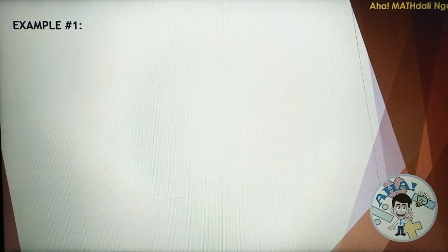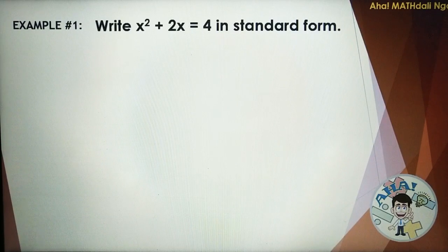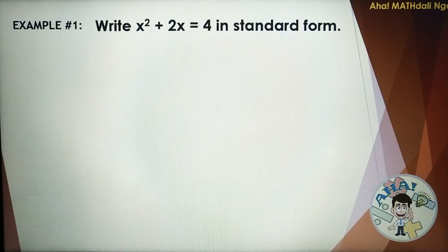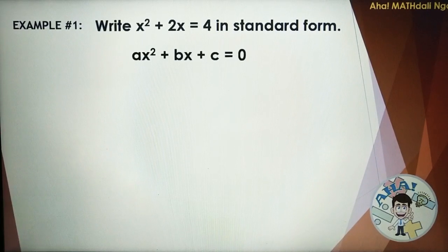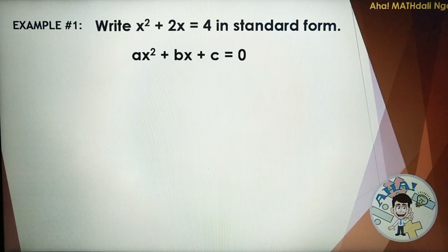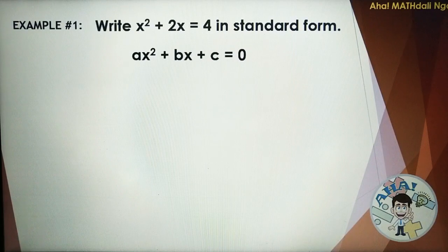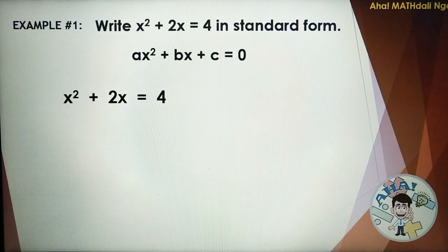Example: Write X squared plus 2X is equal to 4 in standard form. The standard form of a quadratic equation is written as AX squared plus BX plus C is equal to 0. The given equation is X squared plus 2X is equal to 4.